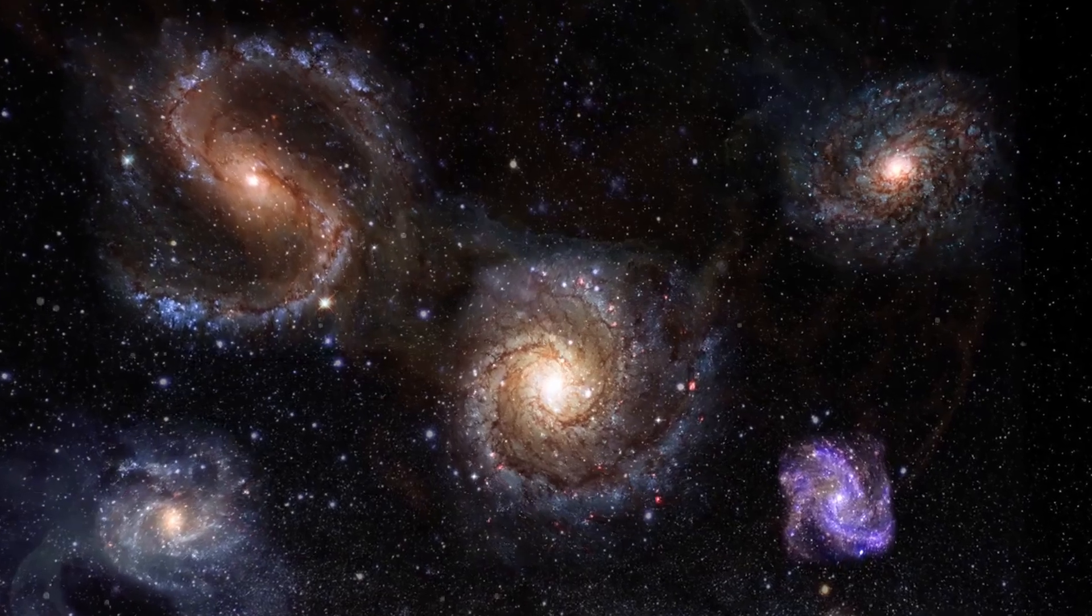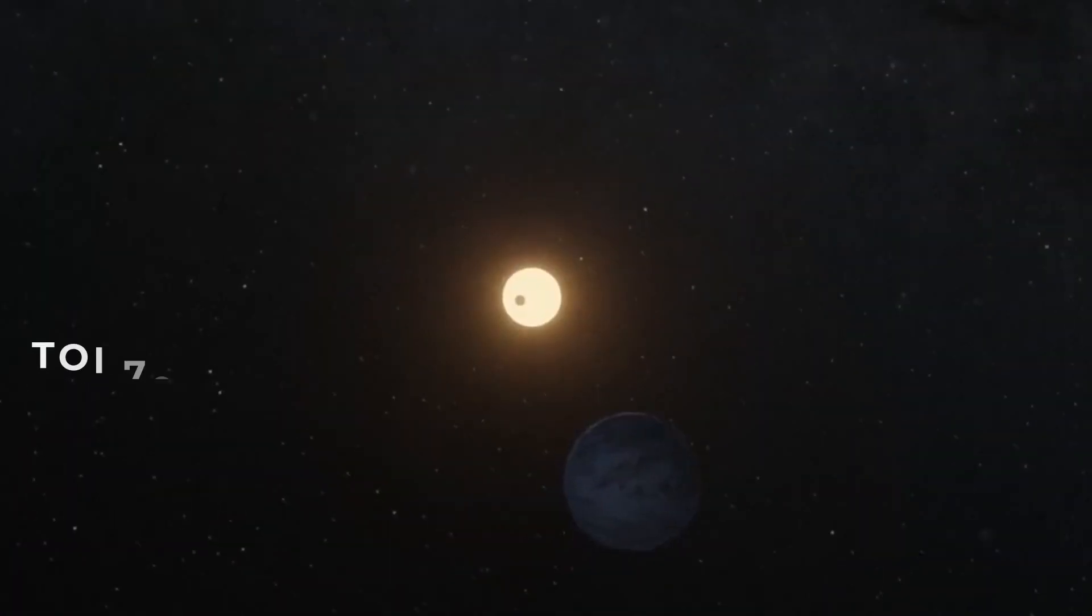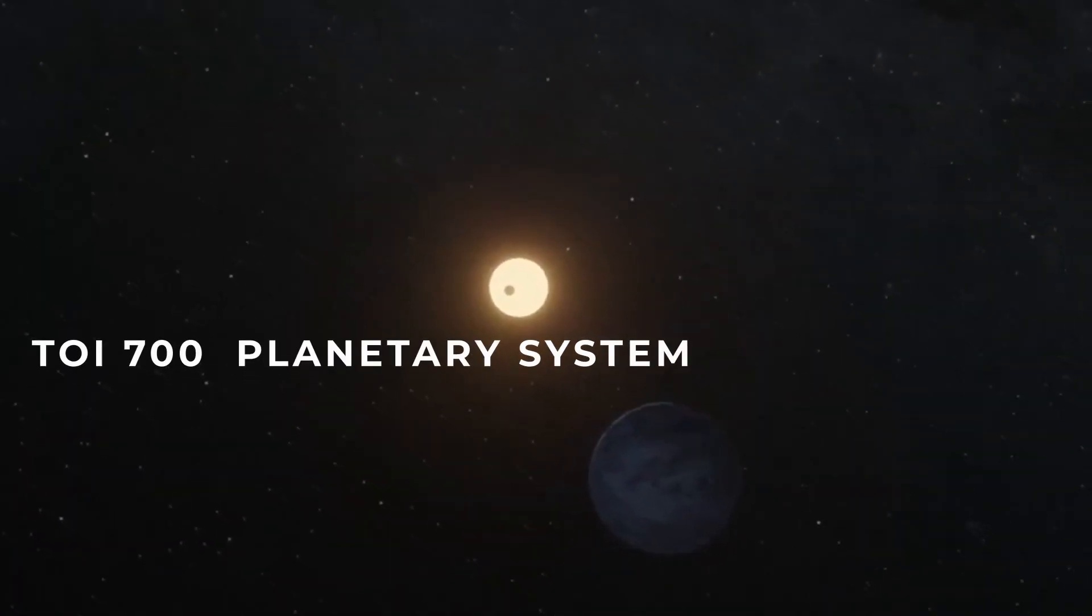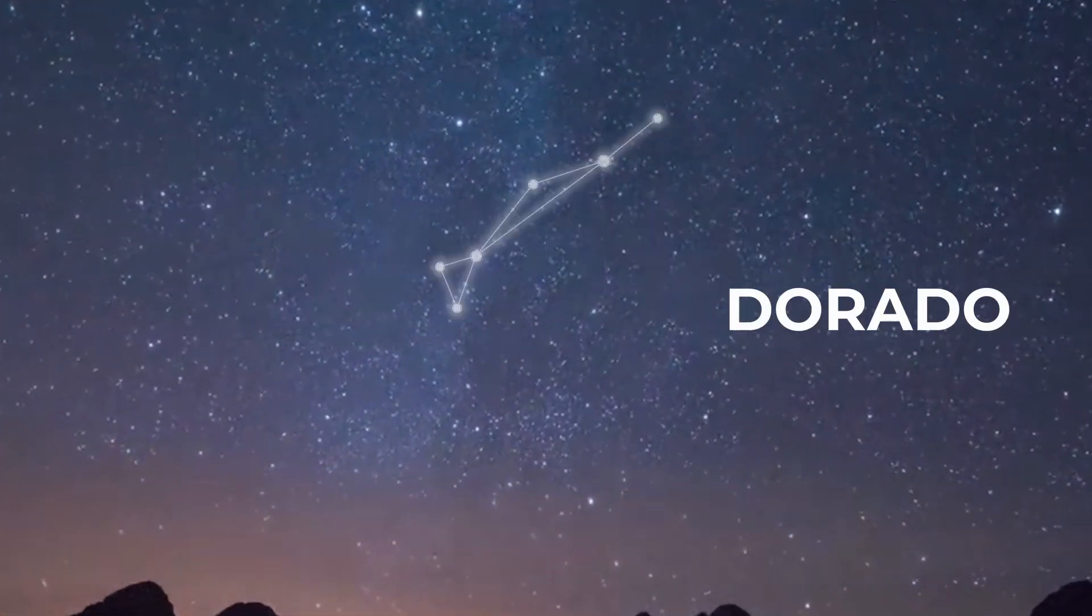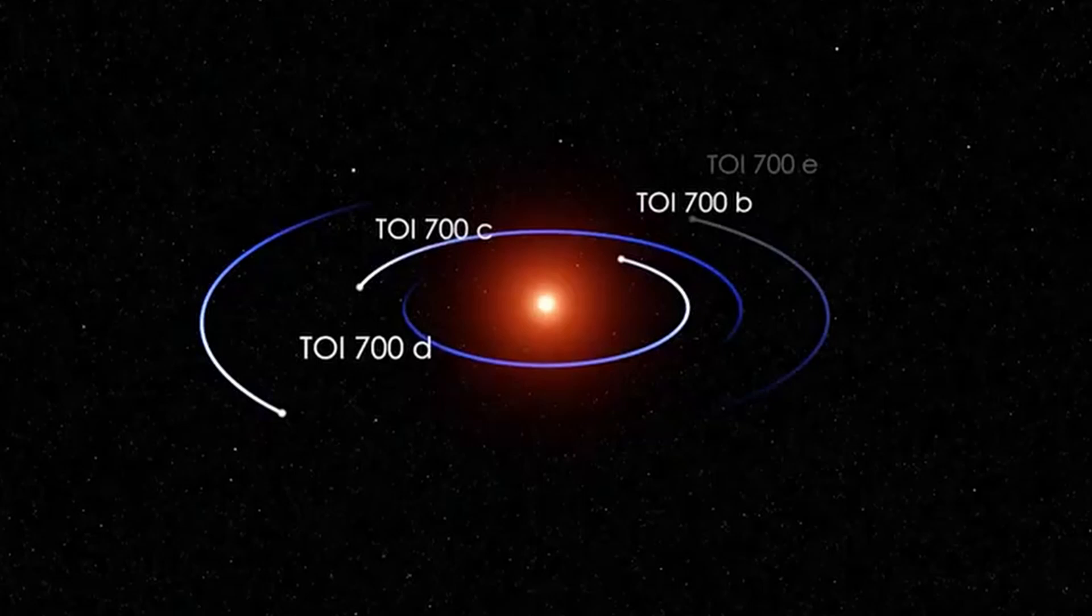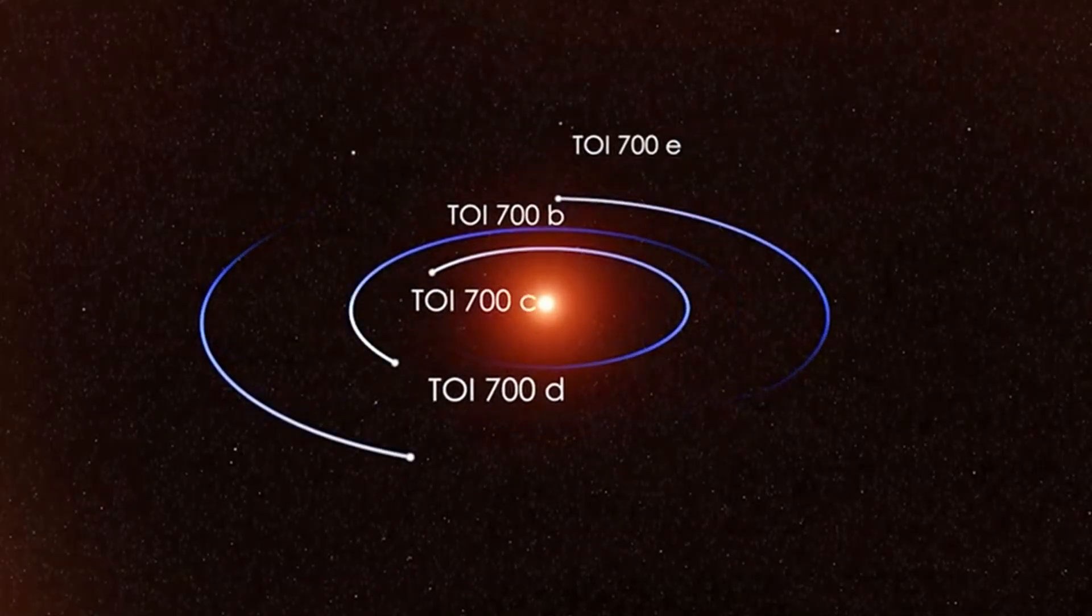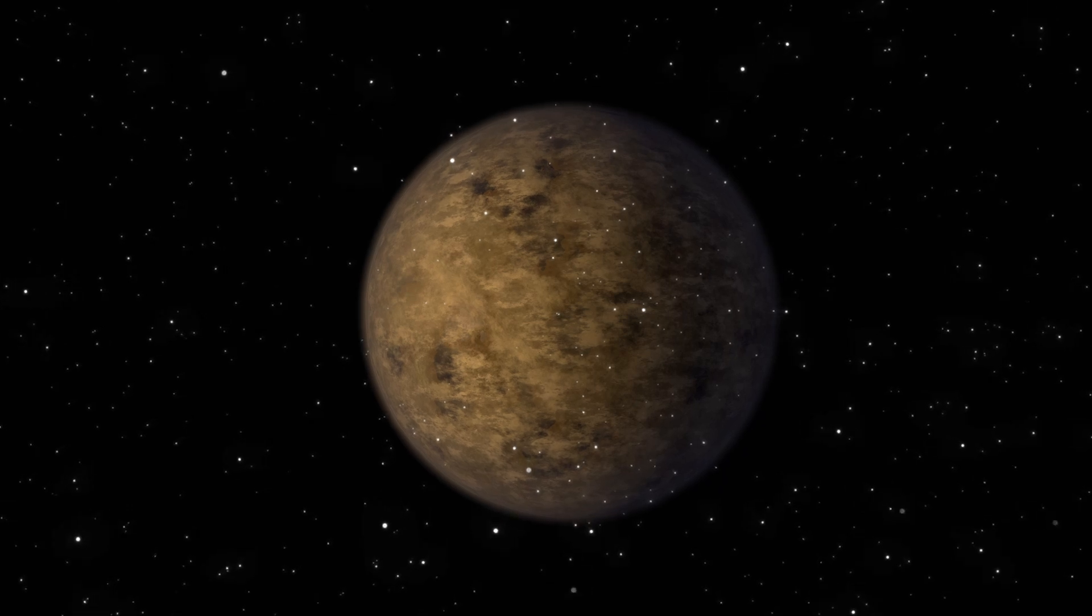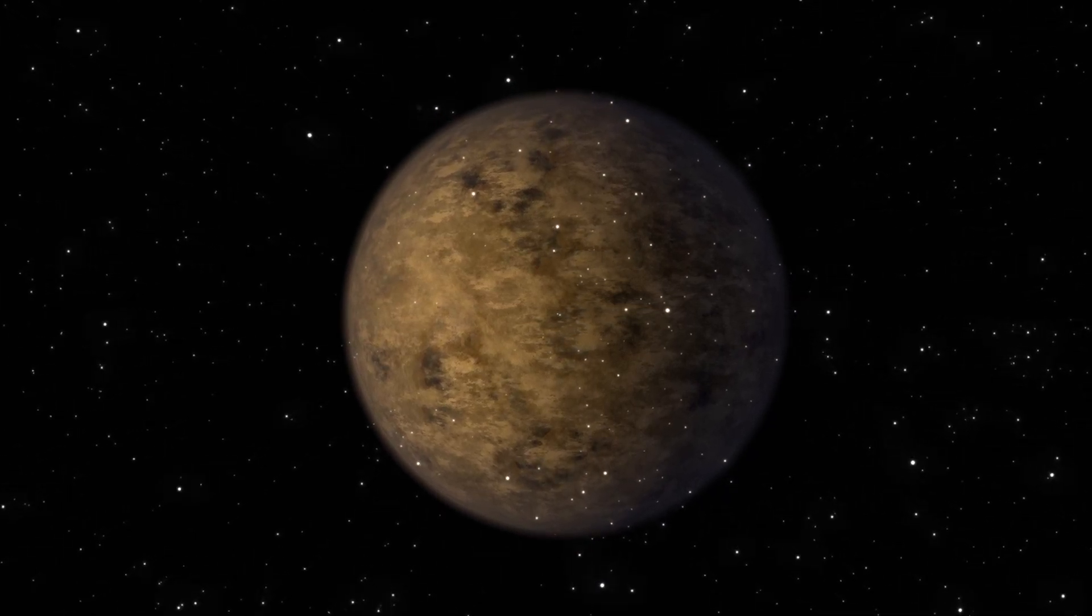In the expansive search for habitable worlds, T-Garden b emerges as a notable contender. However, as we delve deeper into the cosmos, we encounter the TOI 700 Planetary System, a celestial gem revered by experts for its potential to foster extraterrestrial life. Nestled within the constellation Dorado, this star system boasts an array of four planets, two of which reside snugly within the habitable zone of their stellar host. Among these celestial bodies, TOI 700d and TOI 700e emerge as the prime candidates for further investigation.